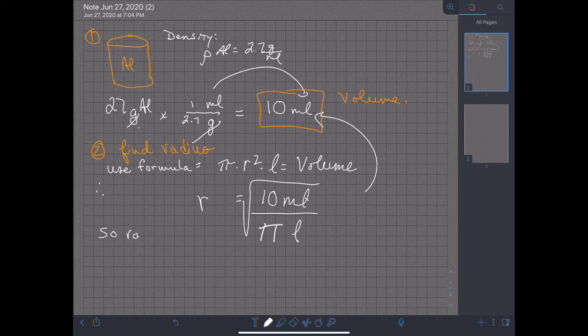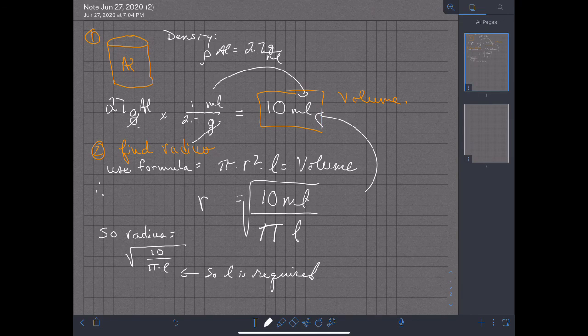That's how we do both sides. So to sum up, the radius is equal to the square root of 10 milliliters divided by pi times length. So you need the length to solve for this. So L is required to solve.